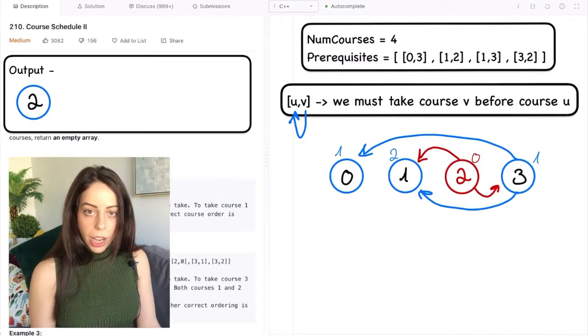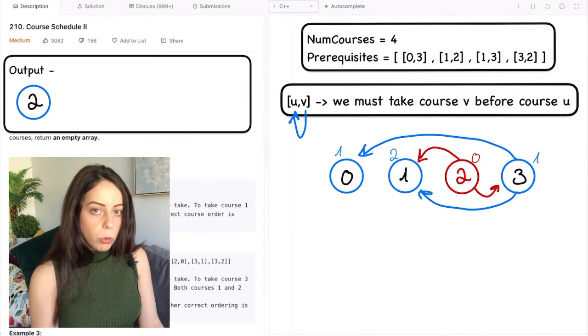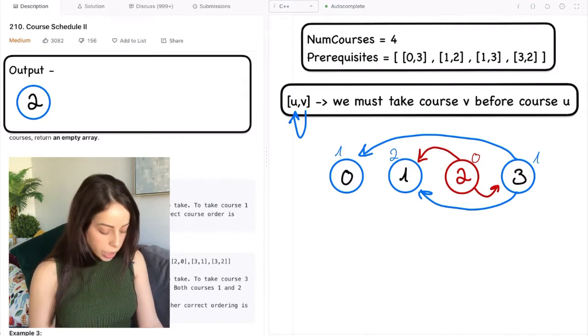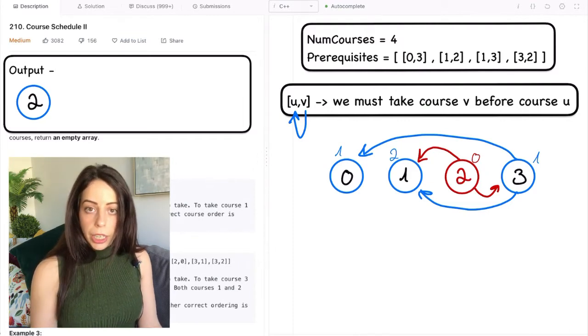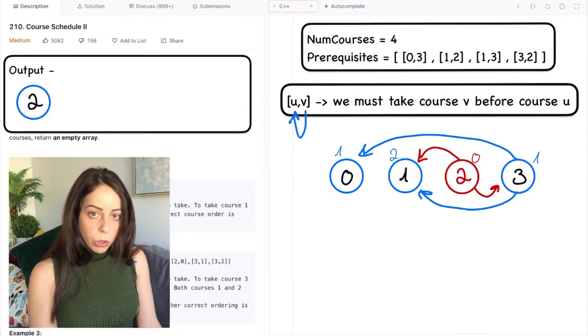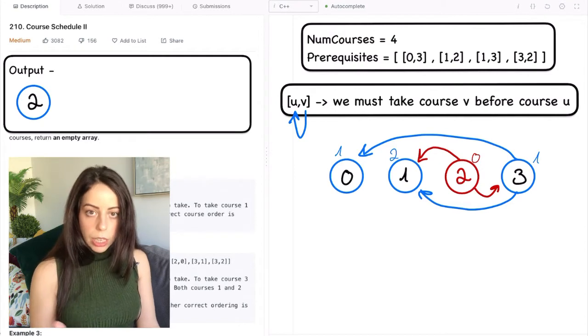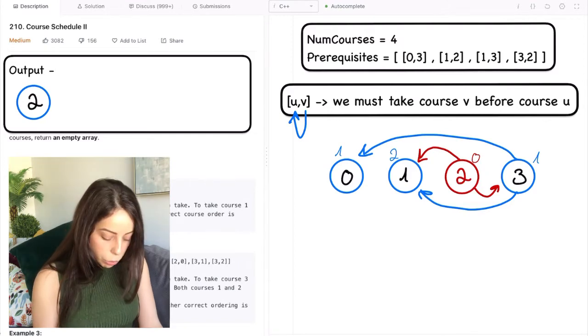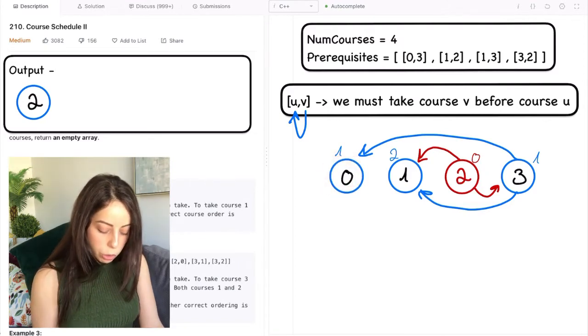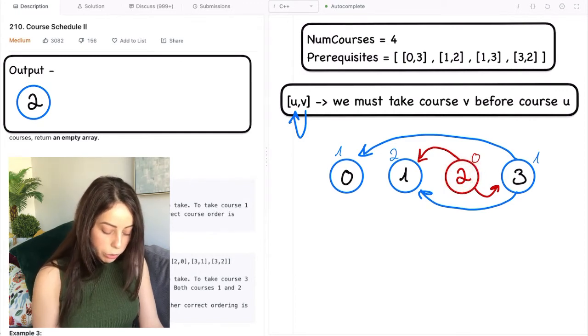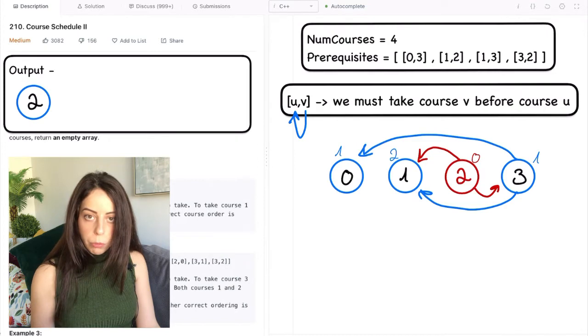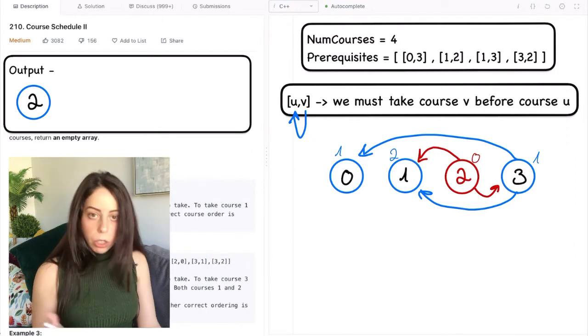Now the next courses that we want to add to our schedule are again the ones that have zero in degrees. Because these are the ones that have zero unfinished prerequisites right. The good news are that we don't need to look at each node in the graph in order to find them. The only nodes that were affected by the removal of node 2 are the ones that are directly connected to it. These are the only nodes that now have smaller in degrees and might have zero in degrees. So these are the only ones that we want to check. There's no point in checking node 0 for example because the removal of node 2 is completely irrelevant to the number of its incoming edges. And this saves us a huge amount of time. It takes us from a quadratic time complexity to a linear one. So it is an important observation. I will talk more about the complexity of this algorithm at the end of the video.